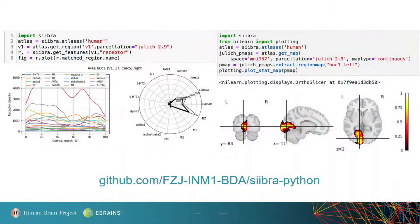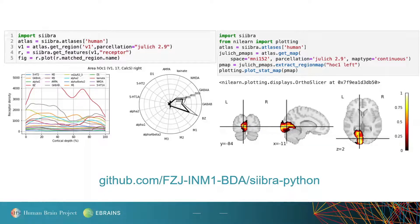We have some exciting news: we are developing a Python client that provides programmatic access to the very same features we've just discussed and more, so you can easily connect your computational workflows to our brain atlases. You can access this client via the link provided below, and we also plan to provide a tutorial video for the Python client in the near future.